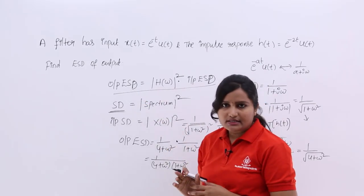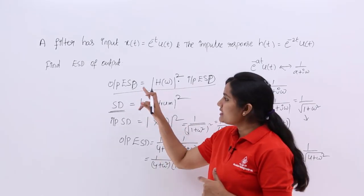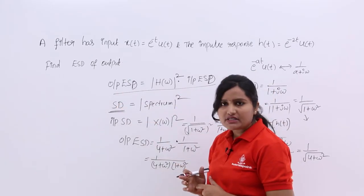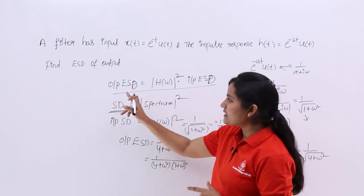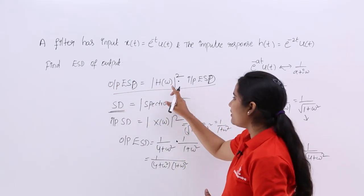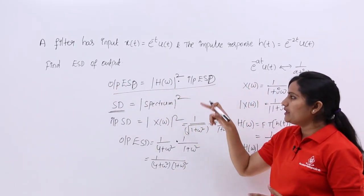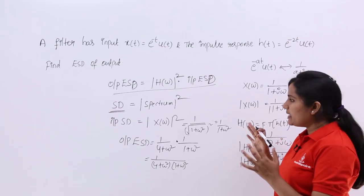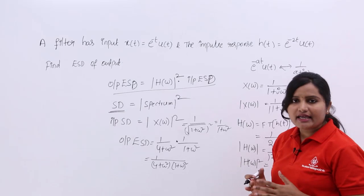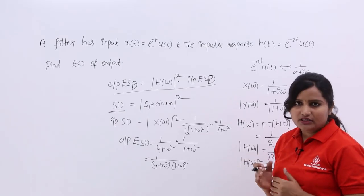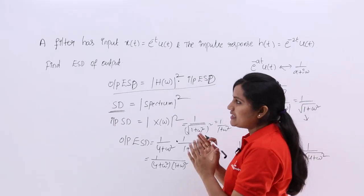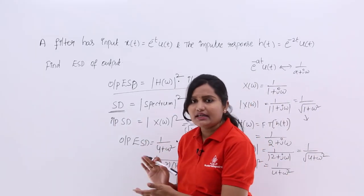This approach also applies to power signals. For power signals, the output PSD (power spectral density) equals the transfer function magnitude squared multiplied by the input PSD. The same method is used, but we use PSD instead of ESD for power signals.